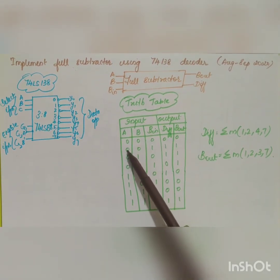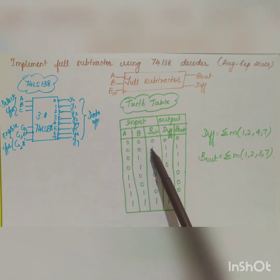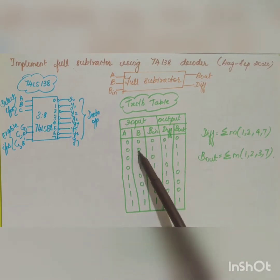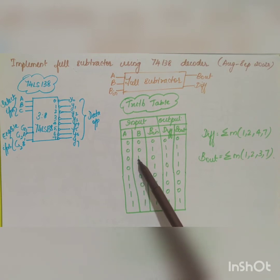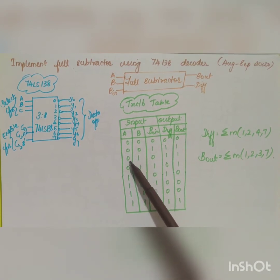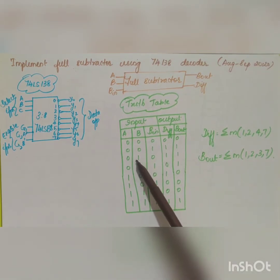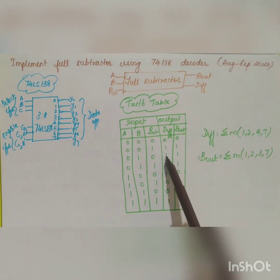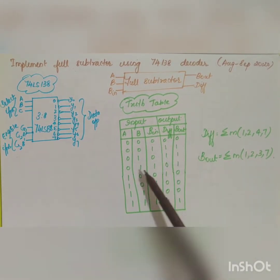In the second case, 0 minus 1 requires a borrow, so Borrow-out = 1 and Difference = 1. Similarly the next case also requires a borrow with Difference = 1. For 1 minus 0, Difference = 1 with no borrow. Next, 0 minus 1 again requires a borrow, giving Difference = 1.